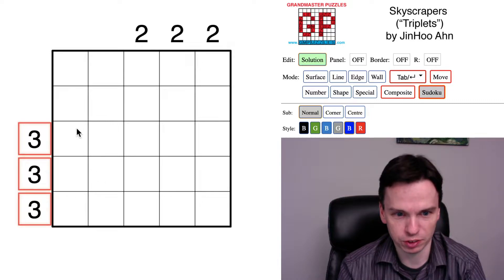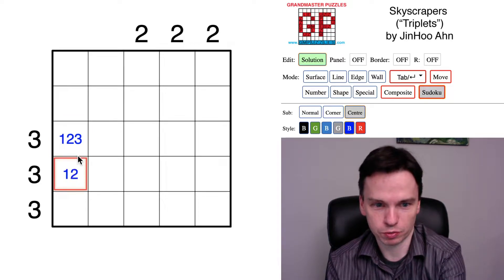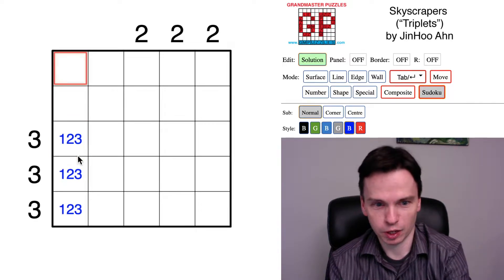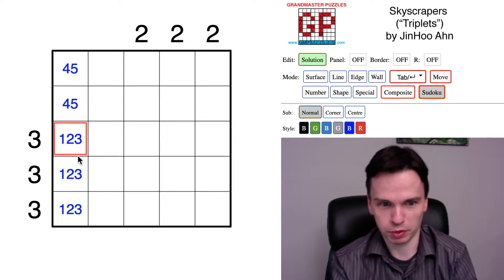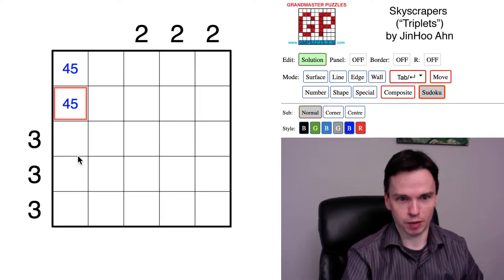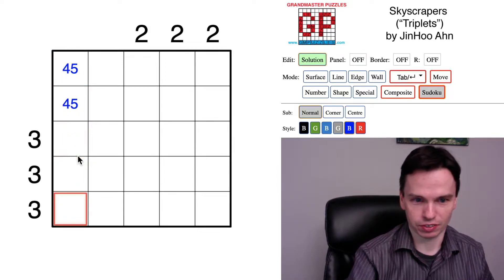I think two observations you can make at the start. The first is with these threes, which will always have a small value in front of them. The first potential observation people make is that four and five have to be in the top of these two cells in that first column.